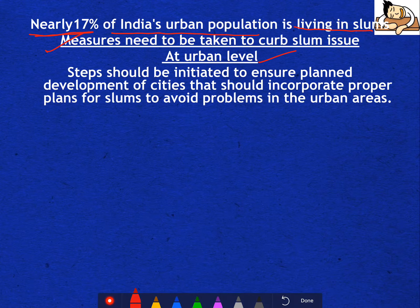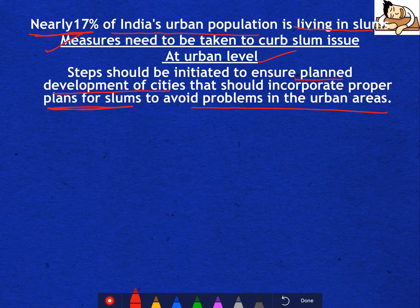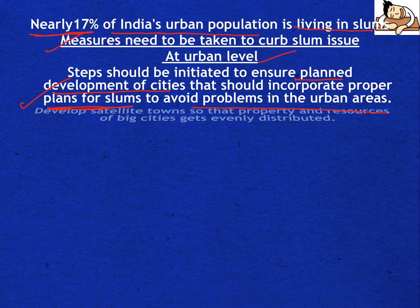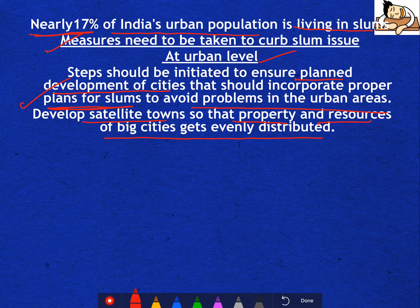First, at the urban level. We need to have planned development of cities, which should actually incorporate proper plans for slums and for migrants to avoid problems in urban areas. Because if there are ever-expanding cities, migration will happen and slums will be made. So there should be proper plans for the migrant population.